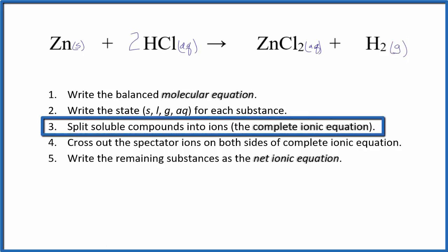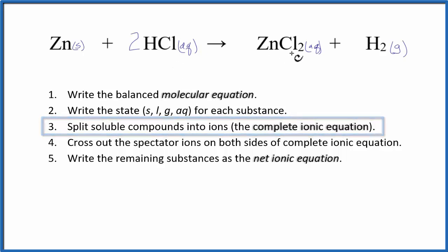Next we can split the soluble compounds into their ions. This HCl and this ZnCl2, they're dissolved in water, they're soluble, so they'll dissociate. Hydrogen on the periodic table is in group 1, it has a 1 plus charge. Chlorine is in group 17, sometimes called 7A, that has a 1 minus charge.